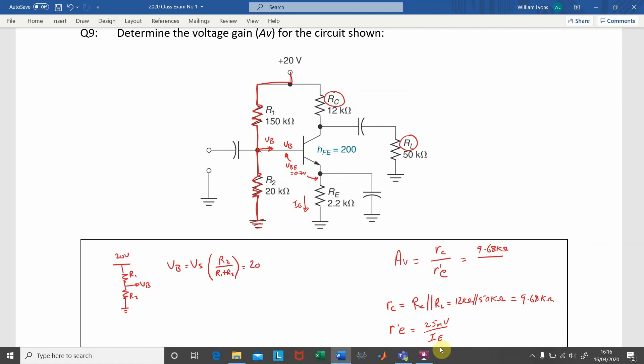If we plug in the values of the circuit with Vs equal to 20 volts, R1 equal to 150 kilo ohms, and R2 equal to 20 kilo ohms, we end up with the value 2.35 volts. We can note on the diagram that VB is equal to 2.35 volts at this position here.